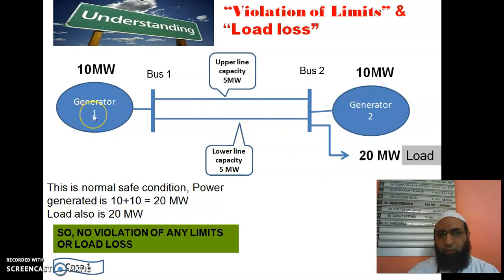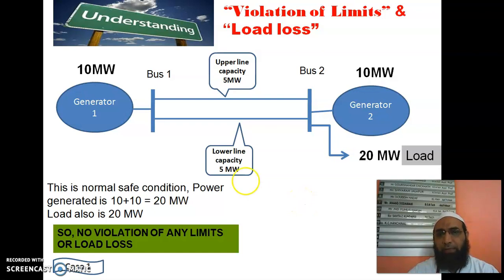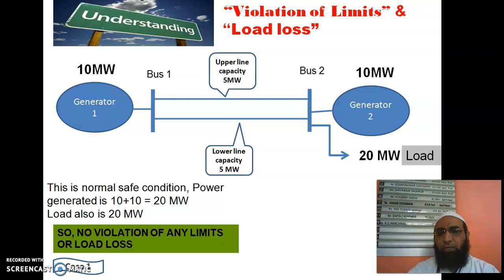We have two generators: generator 1 with a capacity of 10 megawatt and generator 2 which can generate 10 megawatt. There are two buses, bus 1 and bus 2. The upper line capacity is 5 megawatt and the lower line capacity is 5 megawatt. The load required is 20 megawatt. In this normal condition, the two generators produce 10 plus 10 equals 20 megawatt, matching the load. There is no violation of any limits and no load loss — this is a safe, secure condition. This is case 1.